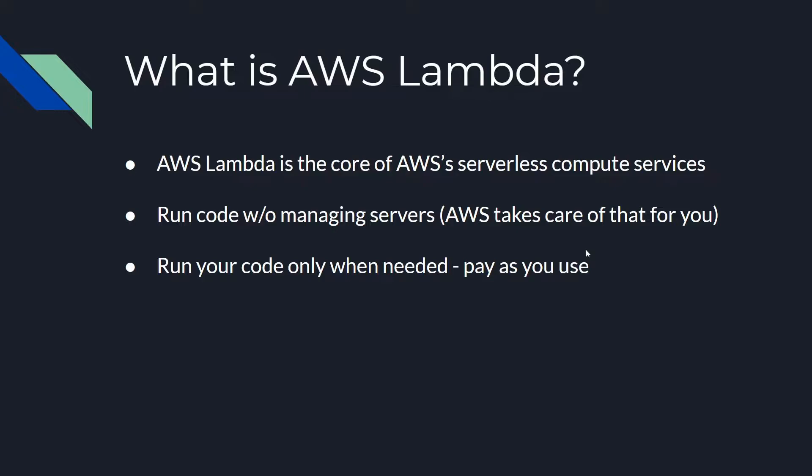So what exactly is AWS Lambda? Lambda is AWS's core compute service for serverless applications. It essentially allows you to run practically any code you write, and you can do all of this without managing any physical servers, which is a huge perk. This is made possible because all the server maintenance is handled by AWS. When you spin up a Lambda function, AWS actually creates a new container on its machines with the desired amount of RAM and CPU allocation.